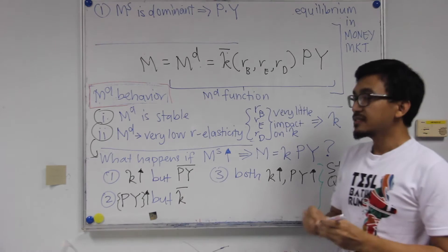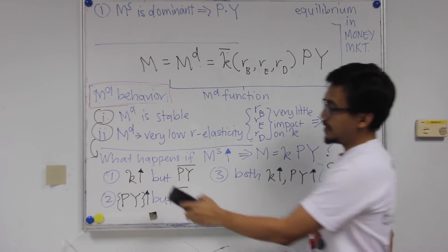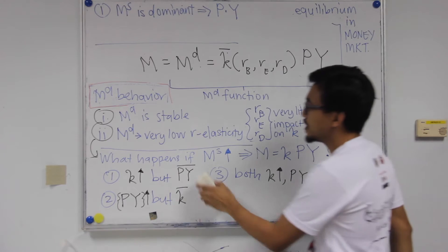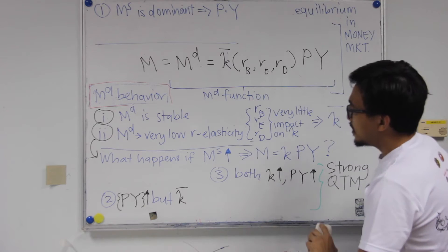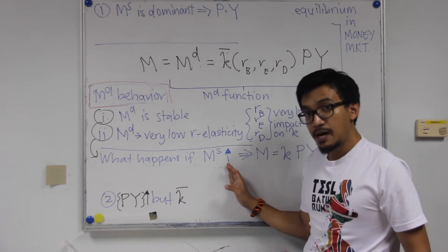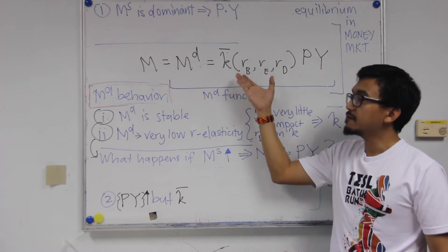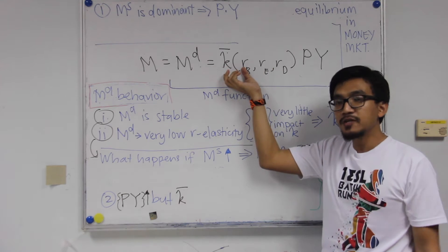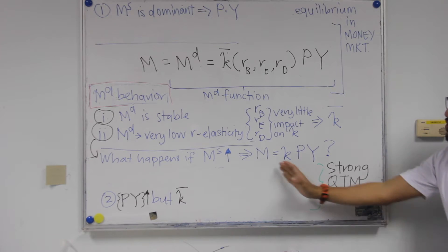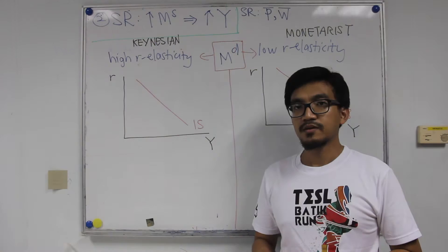What happens when the central bank increases money supply? Since K is now constant and cannot change, PY — nominal income — will have to change. Based on this additional assumption, monetarists are able to show that whenever money supply goes up, nominal income will definitely go up. Because K can be assumed to be constant, this form is what we refer to as the strong QTM, which supports the first proposition.